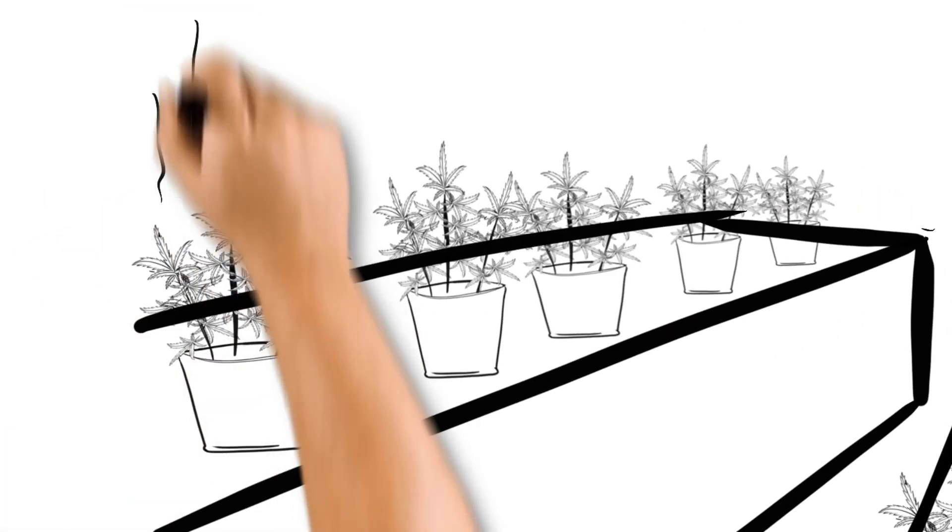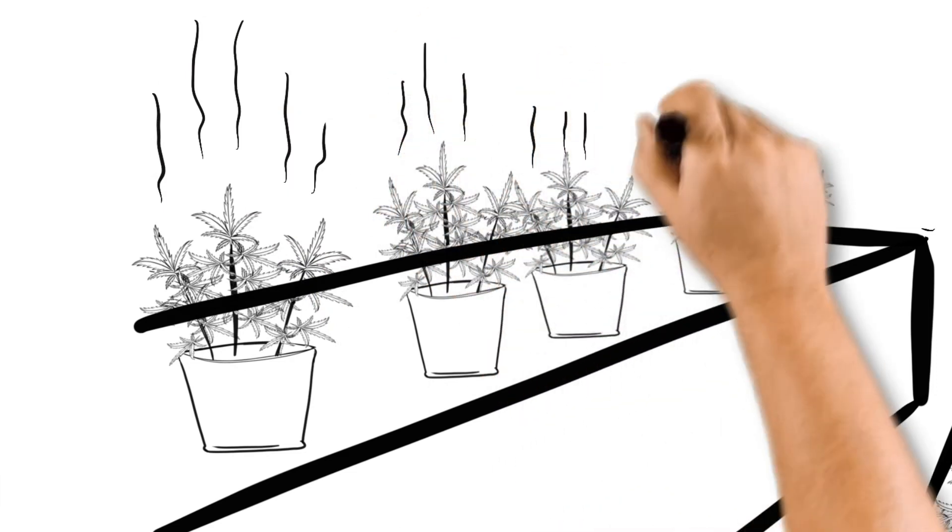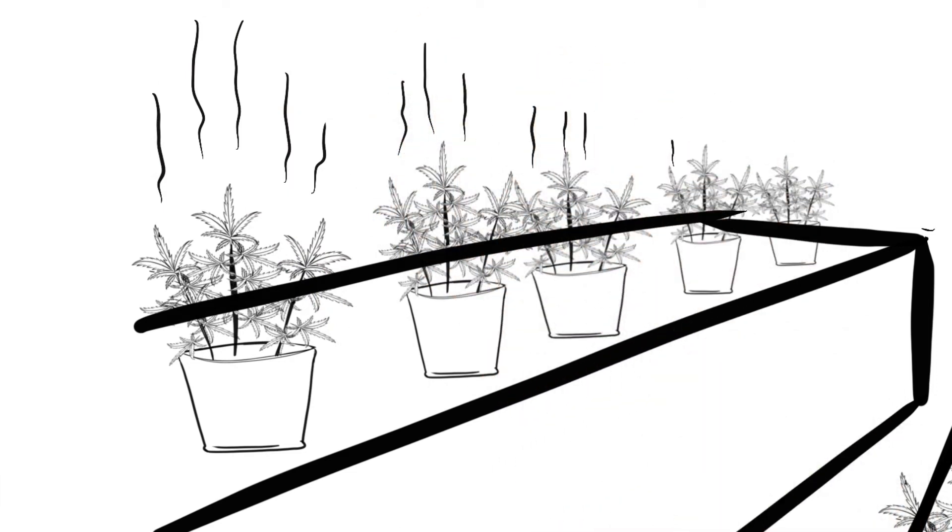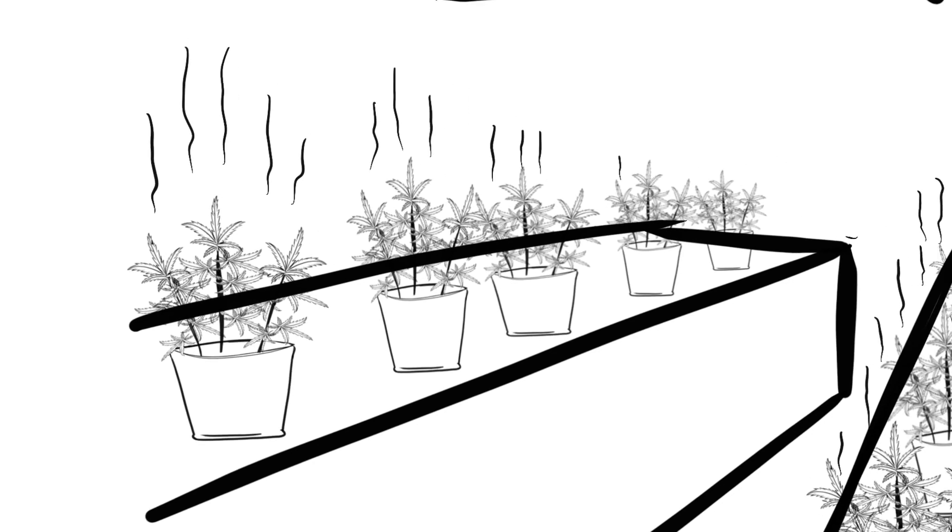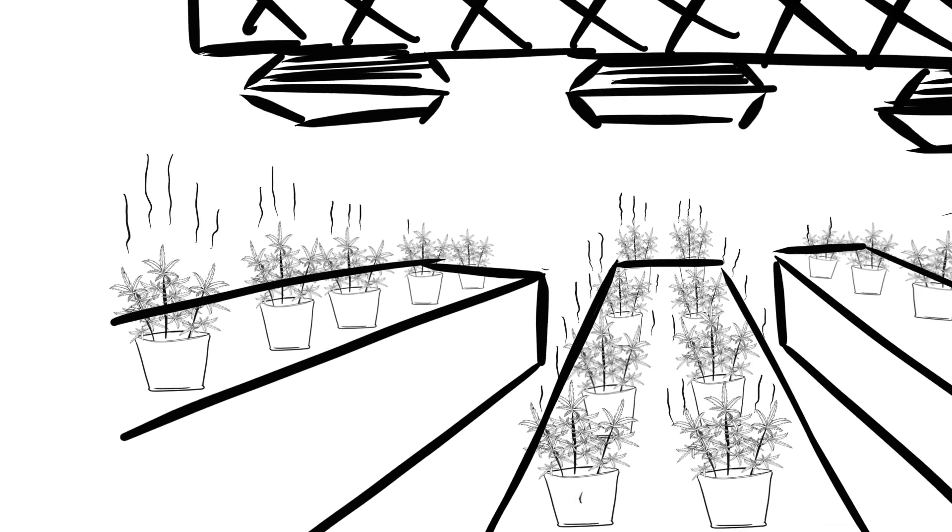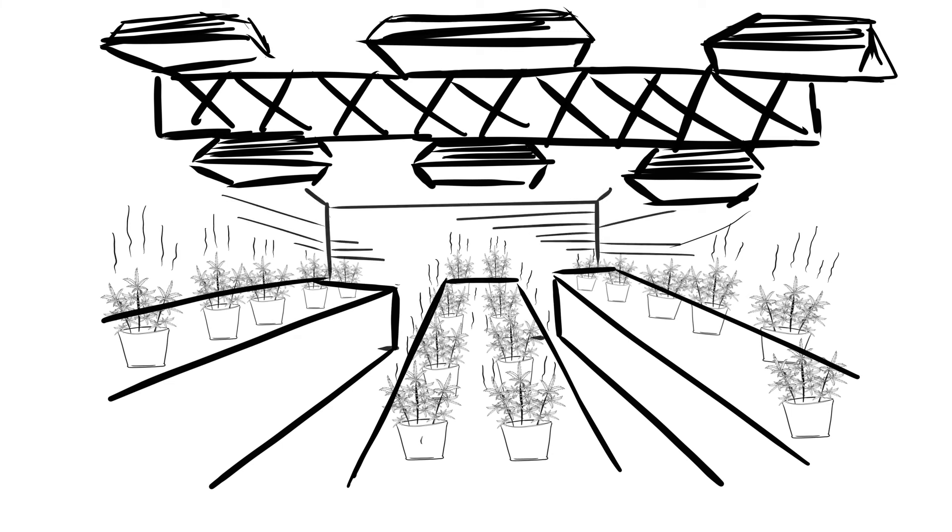Because the very process of cannabis cultivation creates heat, the hydronic cooling system is ideal. With its closed-loop structure, this system ensures separate cultivation rooms in a particular facility are addressed with precision and utmost security.